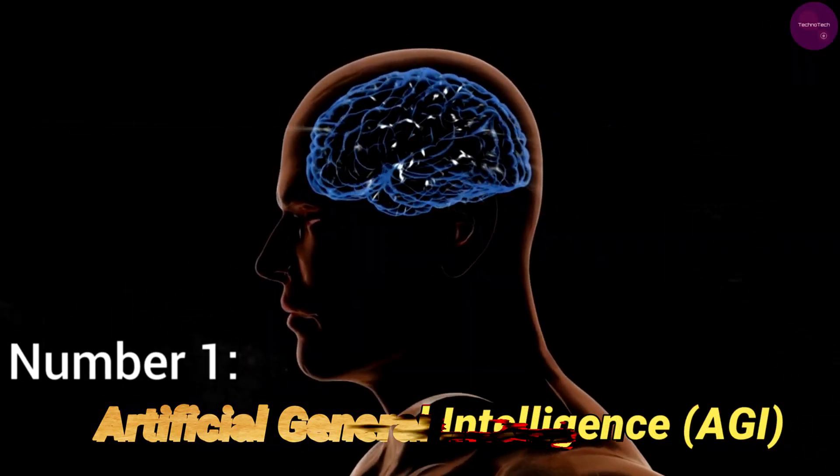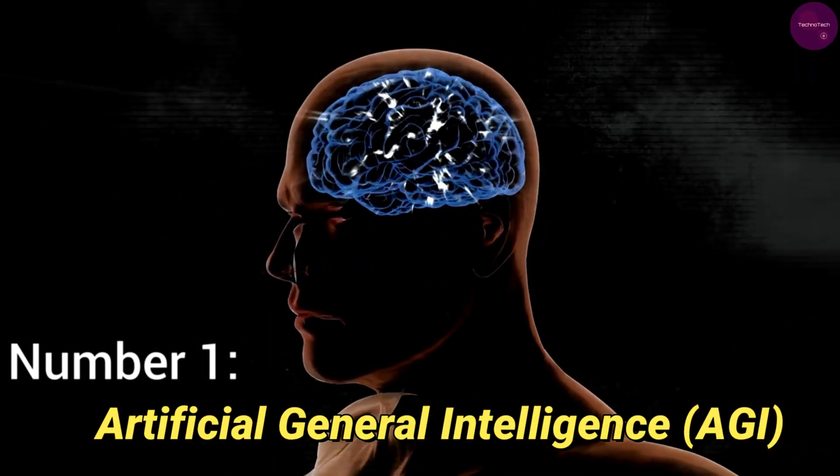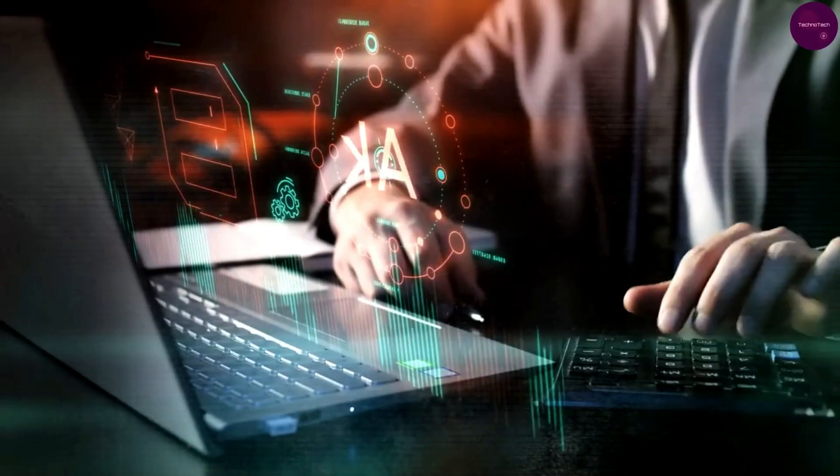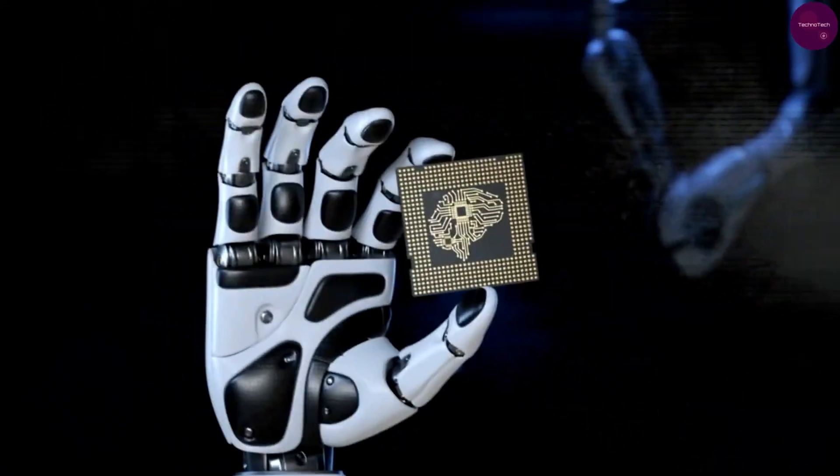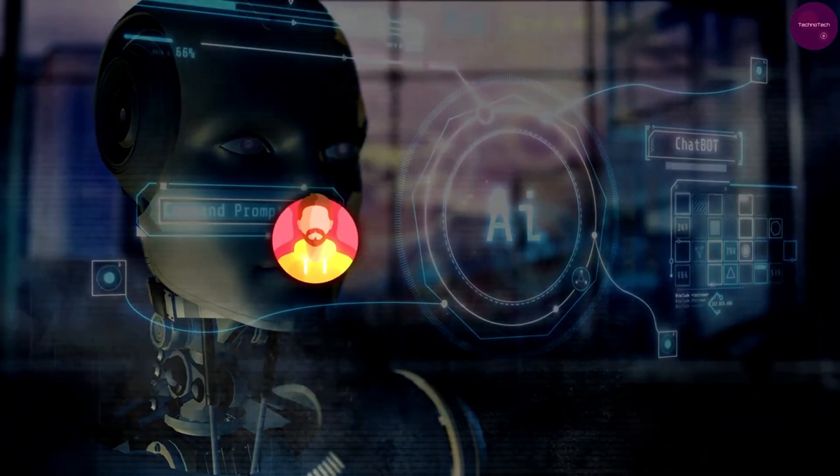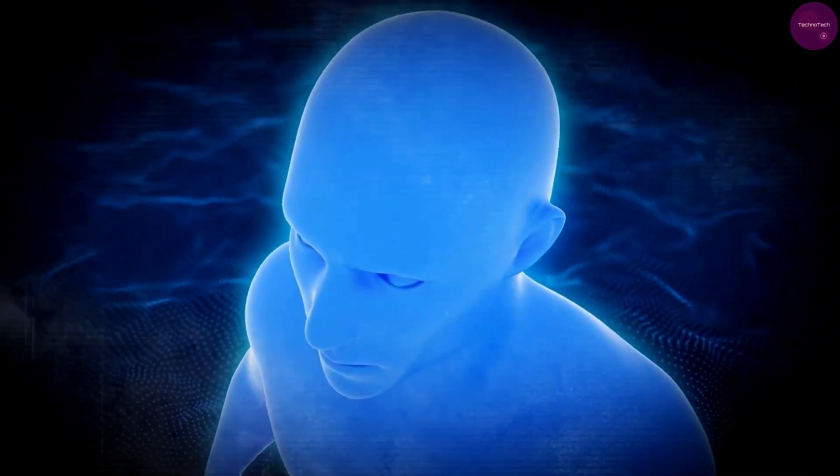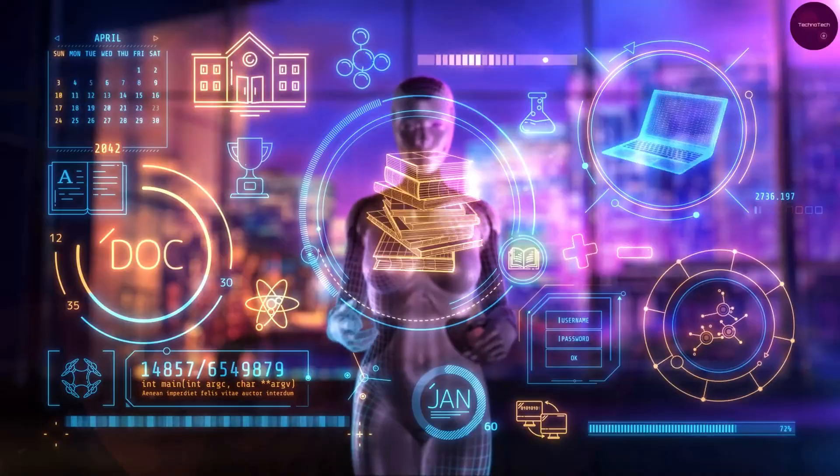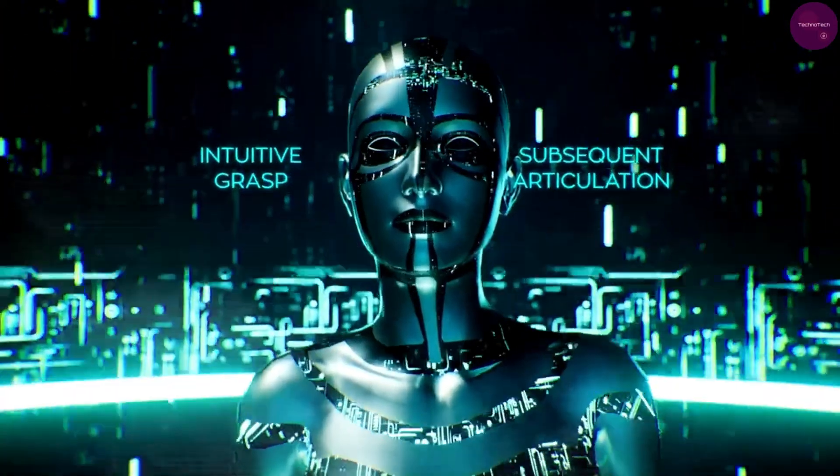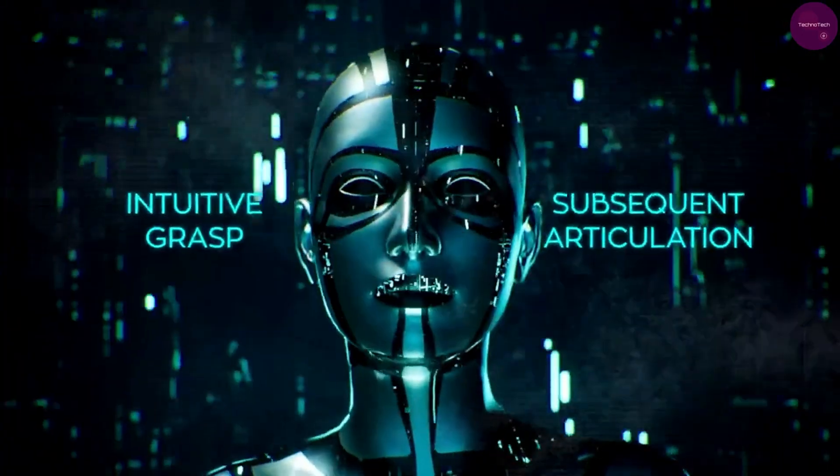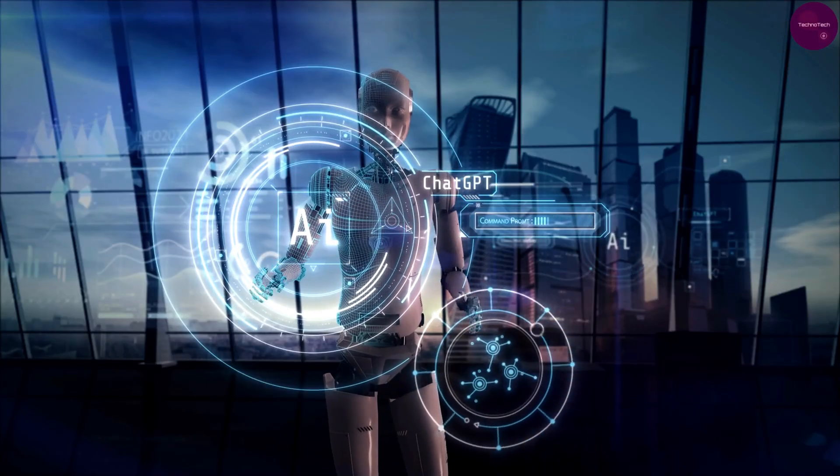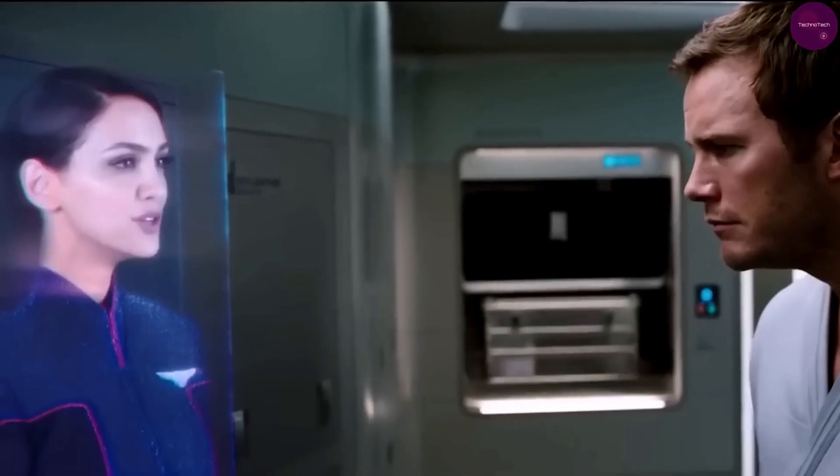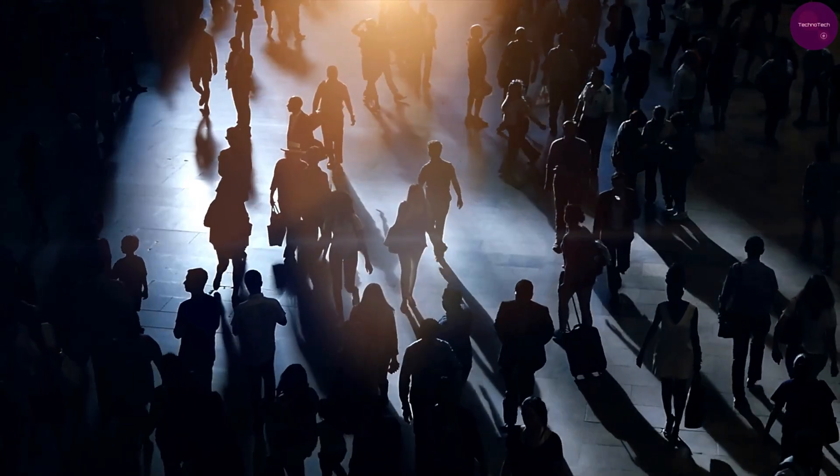Number 1: Artificial general intelligence, AGI. And finally, at the top of our list is artificial general intelligence, or AGI, the holy grail of AI research. Unlike narrow AI systems that are designed for specific tasks, AGI aims to replicate the full range of human cognitive abilities. From scientific research to creative endeavors, AGI promises to revolutionize virtually every aspect of human society. But with great power comes great responsibility, as the development of AGI also raises profound questions about ethics, governance, and the future of humanity itself.